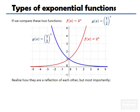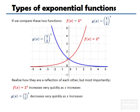These ones are actually also a reflection of each other, but we'll talk about this in a minute. The important thing is that f of x equals 2 to the power of x increases very quickly as x increases, whereas the other one decreases very quickly as x increases.